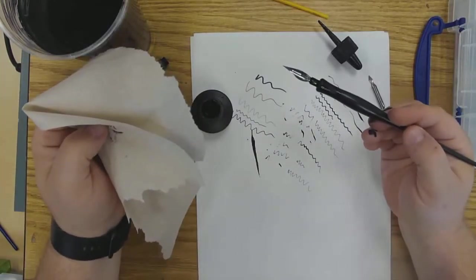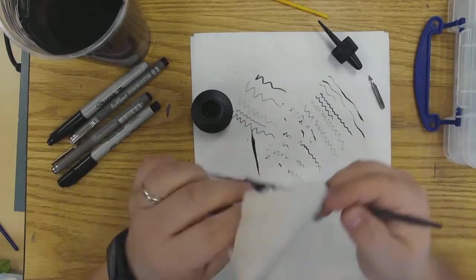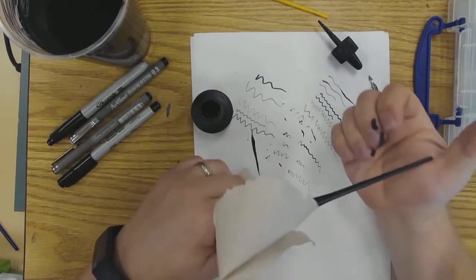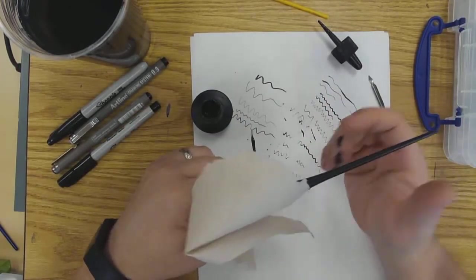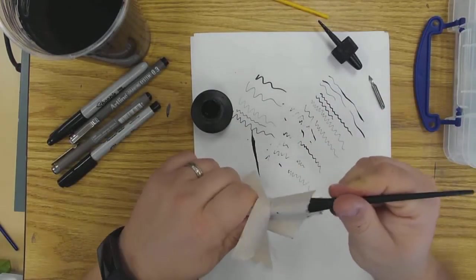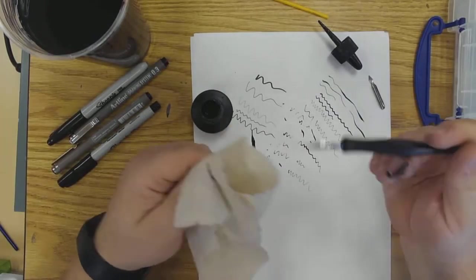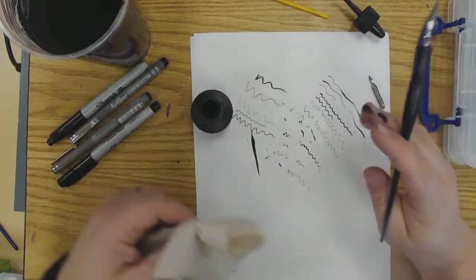And then just wipe off the extra ink. And you're good to go. Just keep this end part here really clean. You can see I got some ink on my finger already. That will probably stain my finger a little bit. I'll have to wash my hands really good to try to get it out. So just be careful with that.